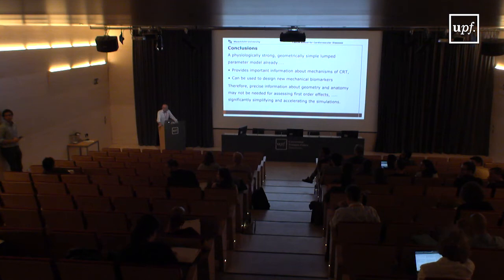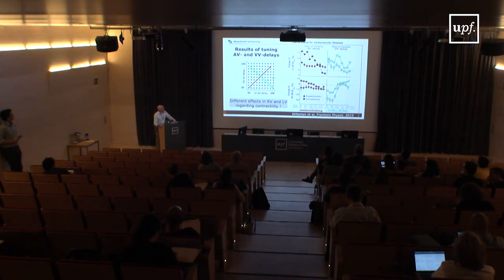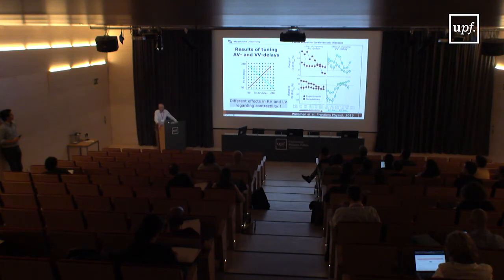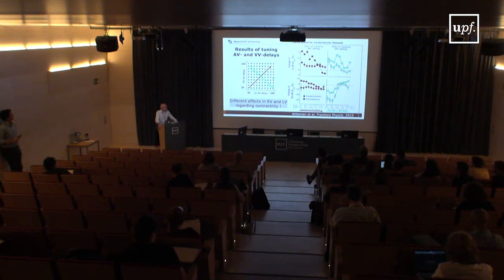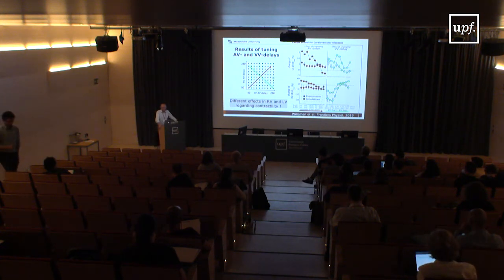Another question: when varying the AV delay in the dog experiments, the model showed more effect than the animals — quantitatively off. The answer is we need to play around with filling status and similar settings. In a normal heart rate range, a huge effect from AV delay wouldn't be expected in the animals. There is another study being prepared for submission where different conditions show a better fit, depending on specific settings in the model.